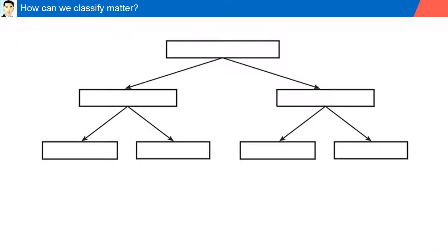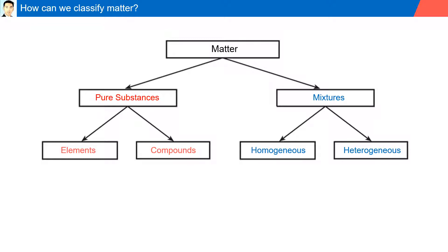How can we classify matter? Matter can be classified into pure substances and mixtures. Pure substances are further categorized as elements and compounds, while mixtures are categorized as homogeneous and heterogeneous.